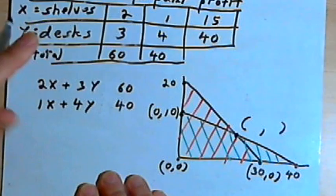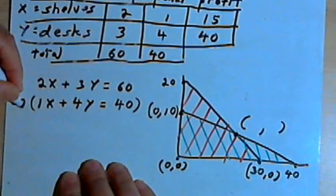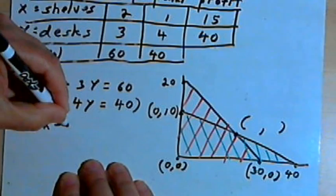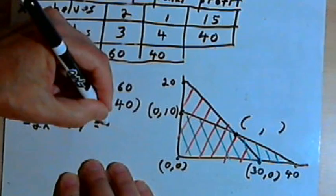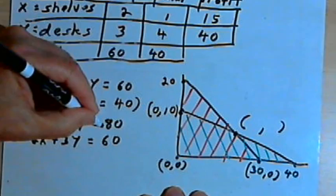So to do that, I'm going to take the inequalities and turn them into equations. And then I'll solve this system of equations to find out what x and y are. I'll do that by multiplying the second equation by negative 2, so I have negative 2x minus 8y equals negative 80. And I'll copy the other equation over, that's 2x plus 3y equals 60.